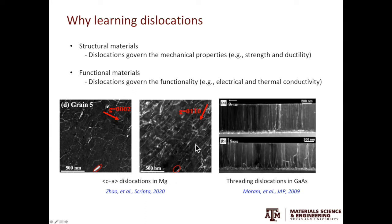The example here shows the dislocation distribution in a deformed magnesium alloy. The TEM images were taken by my student De Xin Zhao. If there is a way we can hinder the free movement of dislocations, then we can strengthen the material.